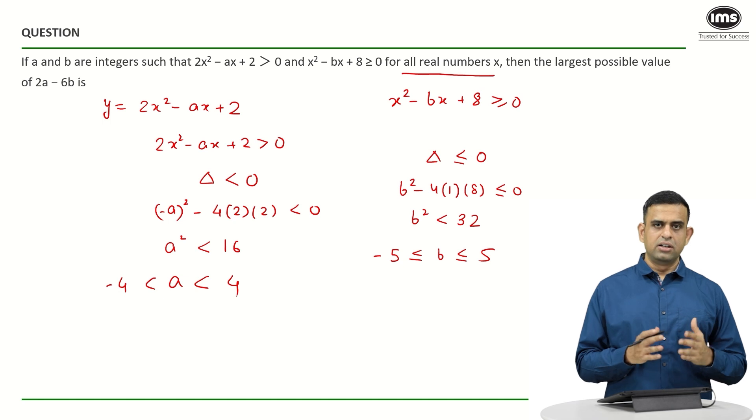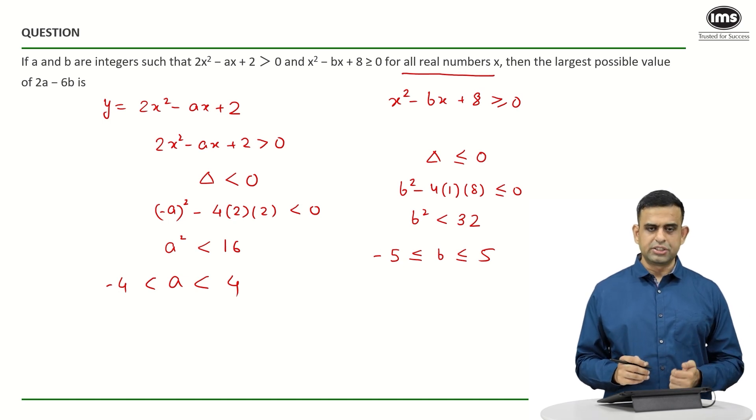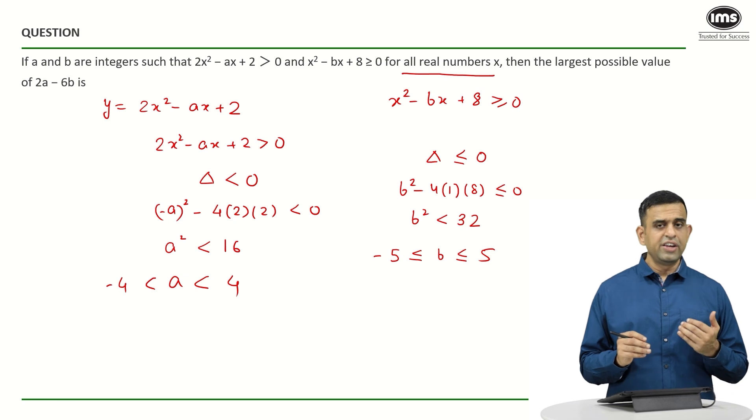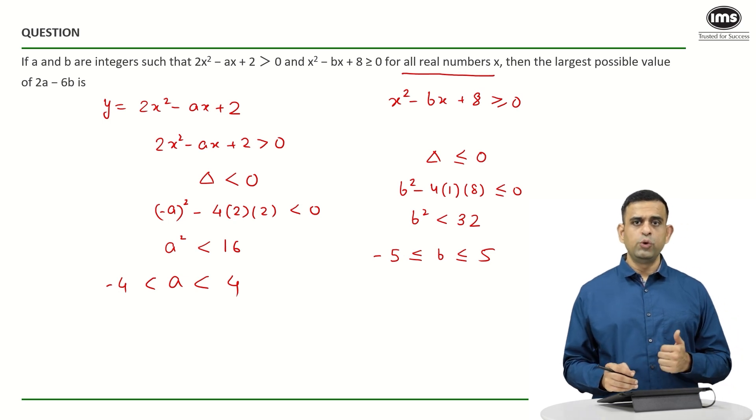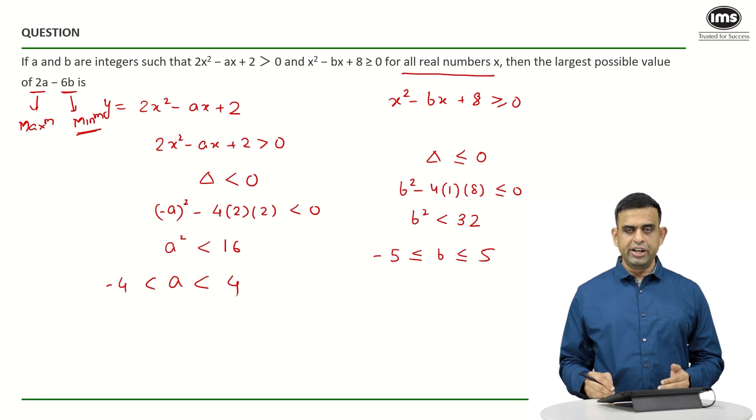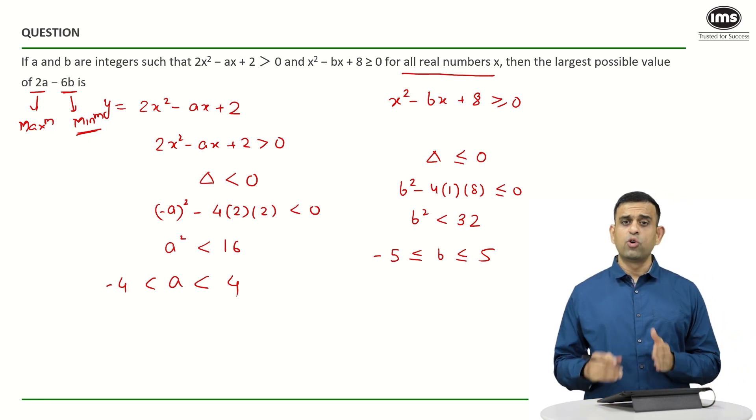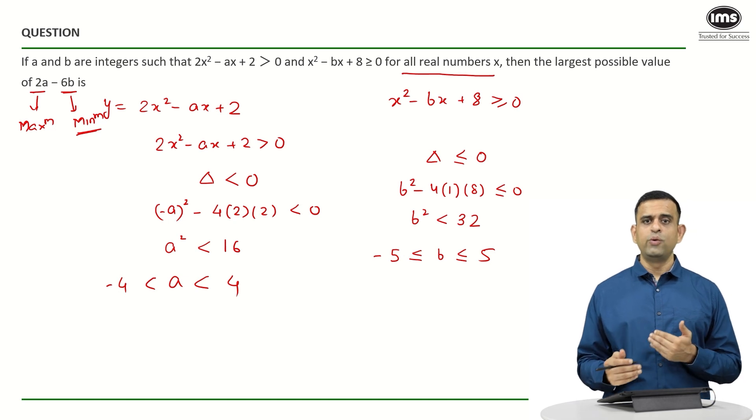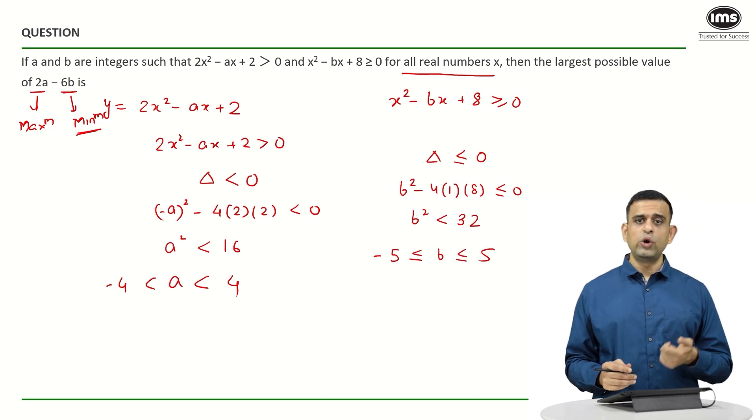Now let us solve the question. The question says find the largest value of the term 2a - 6b. If I want the term 2a - 6b to be maximum, the term 2a should be maximum and the term 6b must be as low as possible that is minimum. So in the condition from minus 4 to plus 4 not including the extreme point, what is my largest possible value of a? Since I want the term 2a to be maximum, I should take a maximum to be equals to 3